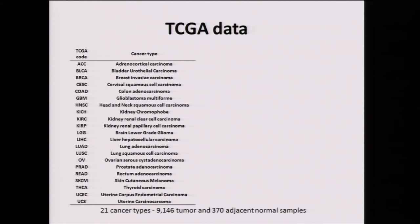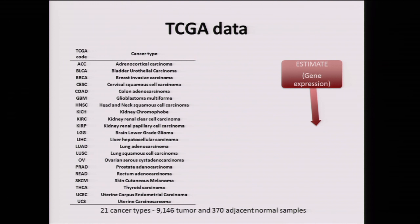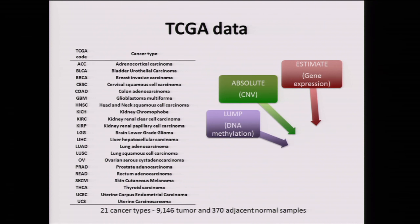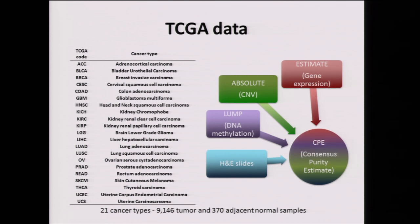So this is what we did. We took data for almost 10,000 tumors in 21 cancer types — solid tumors. We took algorithms: the ESTIMATE algorithm that uses gene expression, the ABSOLUTE algorithm that uses copy number variations, our in-house DNA methylation method, and H&E slides. We combined them all together to create something we called CPE, or consensus purity estimate.